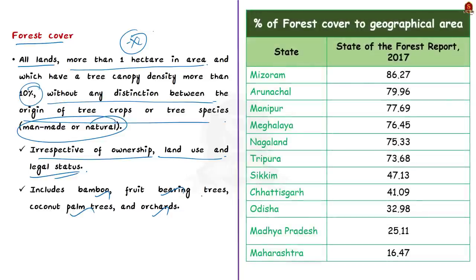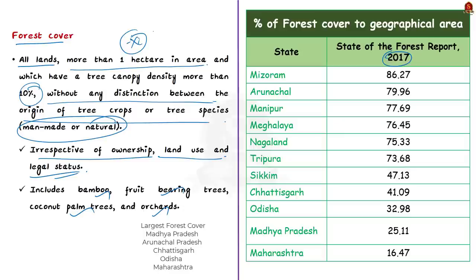Before seeing forest cover of states, the question I took was from 2019 prelims. But the 2019 State of the Forest Report was released after the exam, only in December. So we take data from the 2017 report to arrive at the correct answer. As per the 2017 report, the largest forest cover was in Madhya Pradesh, followed by Arunachal Pradesh, Chhattisgarh, Odisha and Maharashtra — these are the top five states with the largest total forest cover. But the question asks for the percentage of forest cover to the total area of the state, which is separate data from total forest cover.